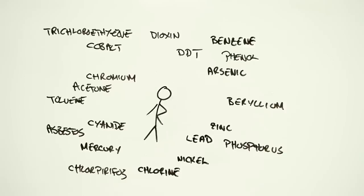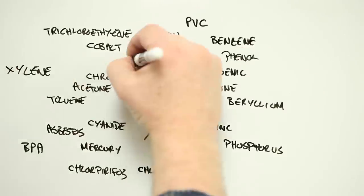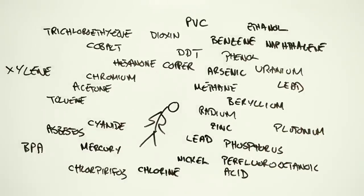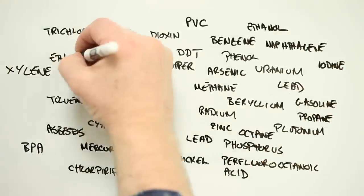And phosphorus, copper, phosphorus, asbestos, phenylacetone, PVC and BPA and xylene, hexanone and radium, uranium and copper, perfluorooctanoic acid, ethanol and naphthalene, and iodine and gasoline and propane, octane, ethylene.